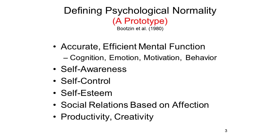It turns out, though, not to be so easy to define abnormal mind and behavior in the abstract. One way to begin is to figure out what we mean by normal mind and behavior. When we ask people—not just psychologists and psychiatrists, but ordinary people on the street—they generally tell us that normal mental and behavioral functioning is characterized by a particular set of features.